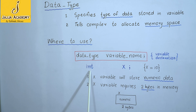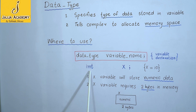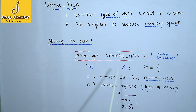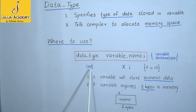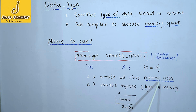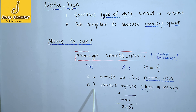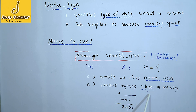The keyword int represents the integer data type. So I will write int x. My x variable has now been declared as an integer variable. This line provides two types of information: first, x will store numeric data because it is of integer data type; second, x requires two bytes in memory.